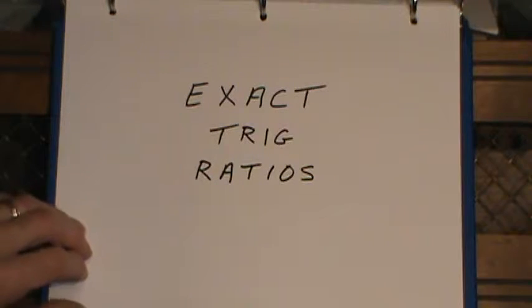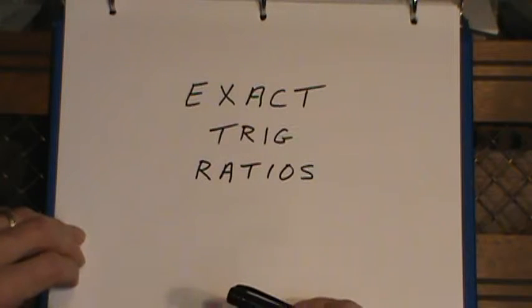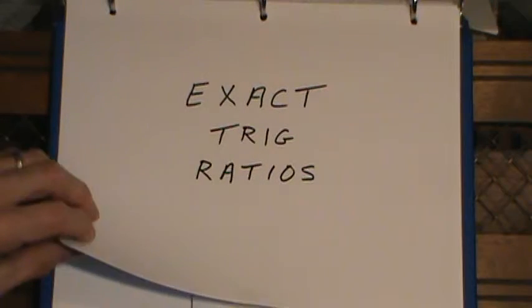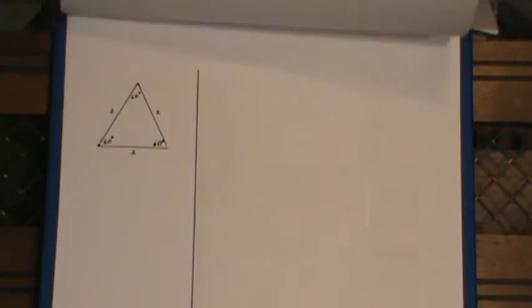Sometimes instead of finding trig ratios from a calculator or a book of tables, you'll be asked to find the exact trig ratios. Now there are just three angles you'll be asked about here, three acute angles: 30 degrees, 60 degrees, and 45.